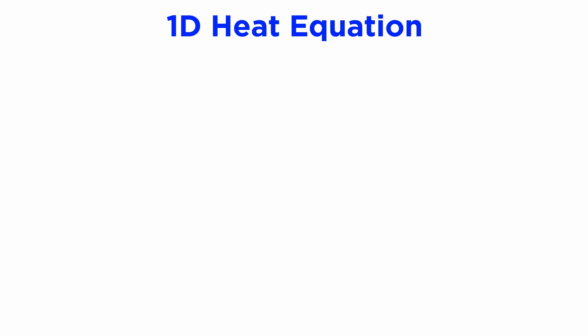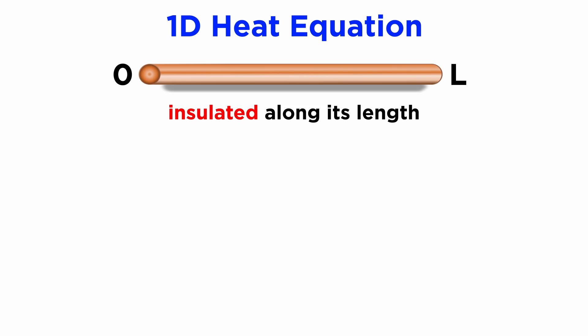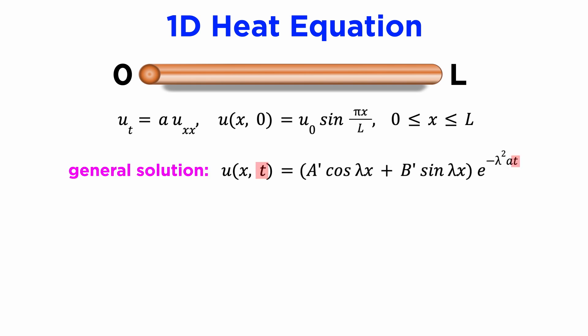Here is an example relating to heat transfer. If we have a one-dimensional metal rod between the positions x equals zero and x equals L, where L is the length of the rod, and we insulate the rod from the environment along its length but not at its ends, then the temperature distribution u of x t is modeled by the heat equation. Suppose that we give the rod an initial temperature distribution u of x zero equals u zero sine of pi x over L. By subbing in t equals zero to our general solution and comparing the initial spatial distribution, we find that the coefficient of sine must be u zero, and that lambda equals pi over L is the only possible value.